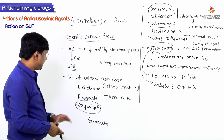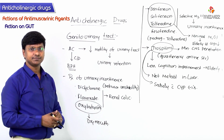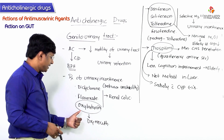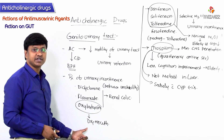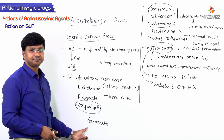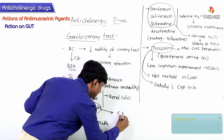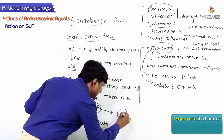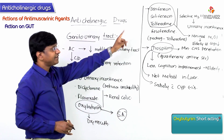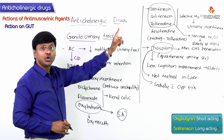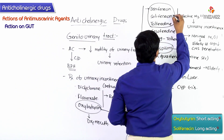Two important MCQ points: oxybutynin causes dry mouth and is the shortest-acting drug in this group, whereas solifenacin is the longest-acting drug.